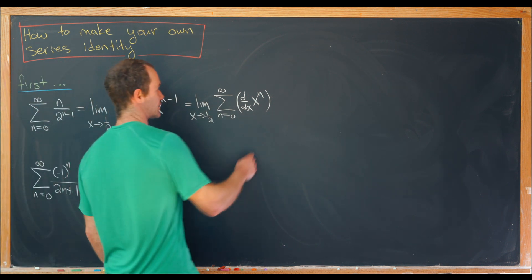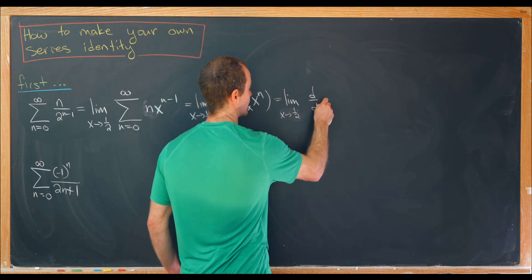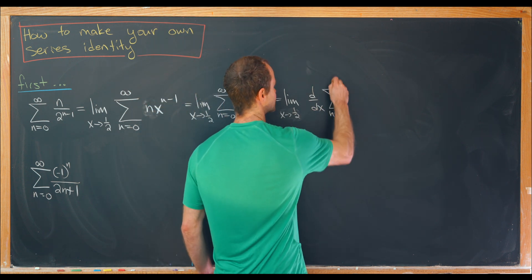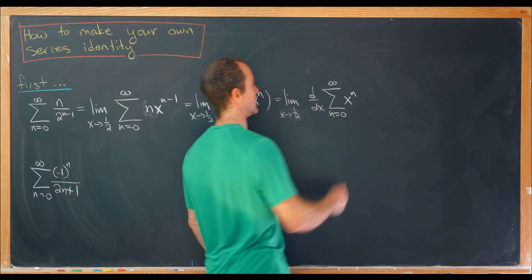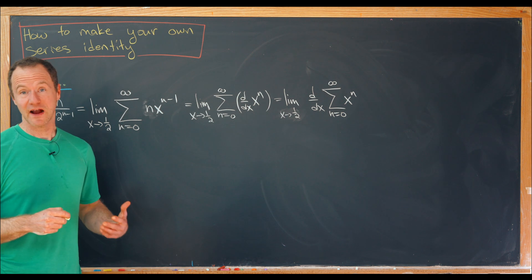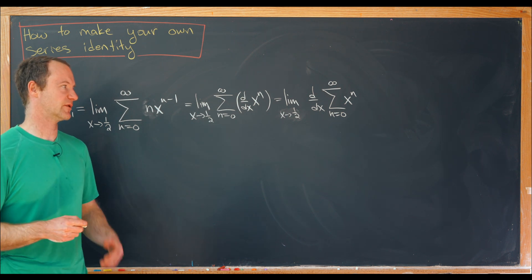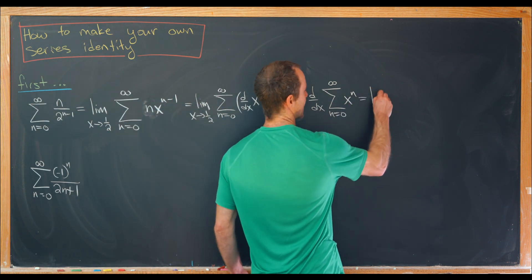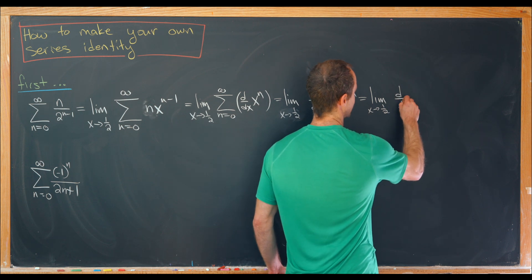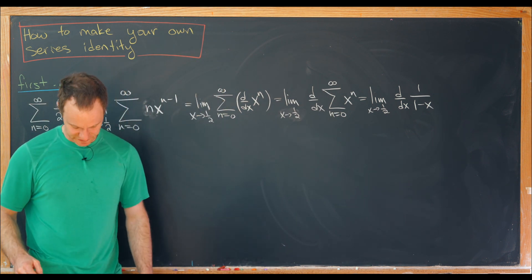We'll factor that derivative out, leaving us with the limit as x goes to 1/2 of the derivative with respect to x of the sum as n goes from 0 to infinity of x to the n. That sum is precisely a geometric series, and recognizing geometric series is an extremely helpful skill for this type of thing. So we can rewrite this as the limit as x goes to 1/2 of the derivative with respect to x of 1 over 1 minus x — that's the sum of the geometric series.